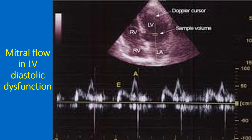The upper half of the image shows the apical 4-chamber view of the heart. The Doppler cursor and sample volume are seen along the midline of the left ventricle. The lower half shows the Doppler flow pattern across the mitral valve, with the X-axis representing time and the Y-axis representing velocity in centimetres per second.